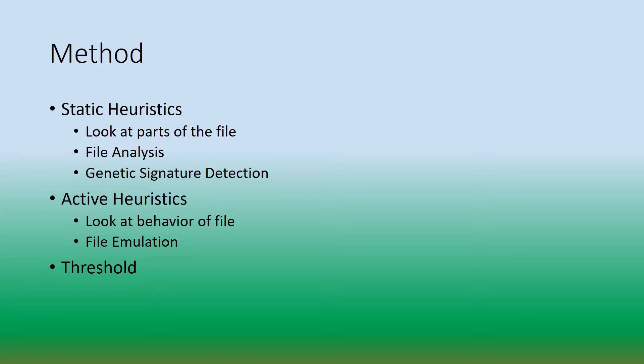There's static and active heuristics. Static heuristics involves two different methods: file analysis and genetic signature detection, and both of these methods look at specific parts of the file — specific lines of code — and if there are any questionable lines of code, it might indicate that the file is malicious. In active heuristics, we use the method of file emulation, where we run the file and analyze its behavior and the different actions that the file performs.